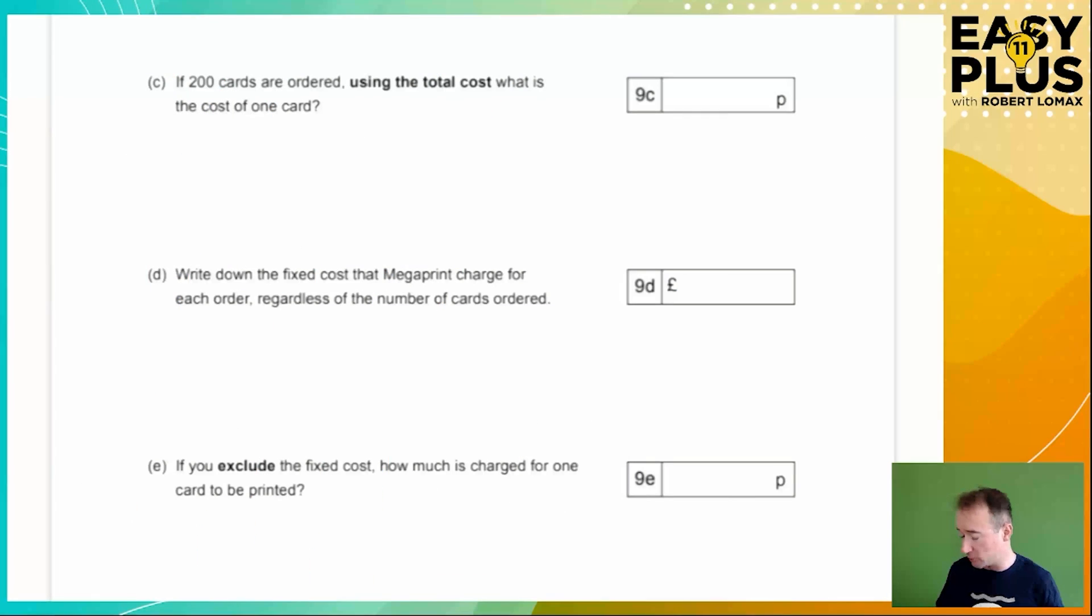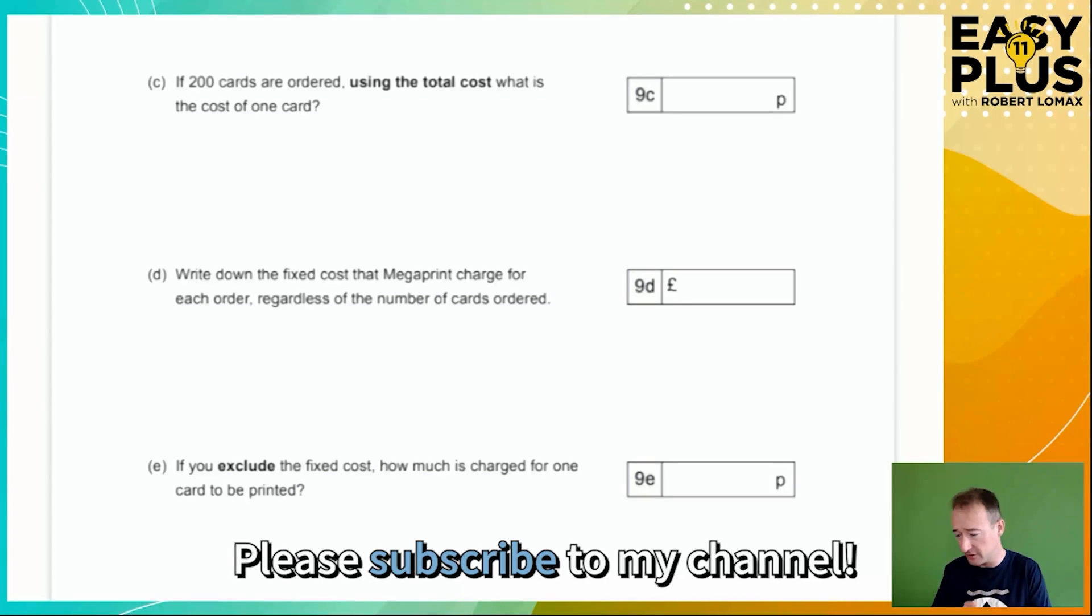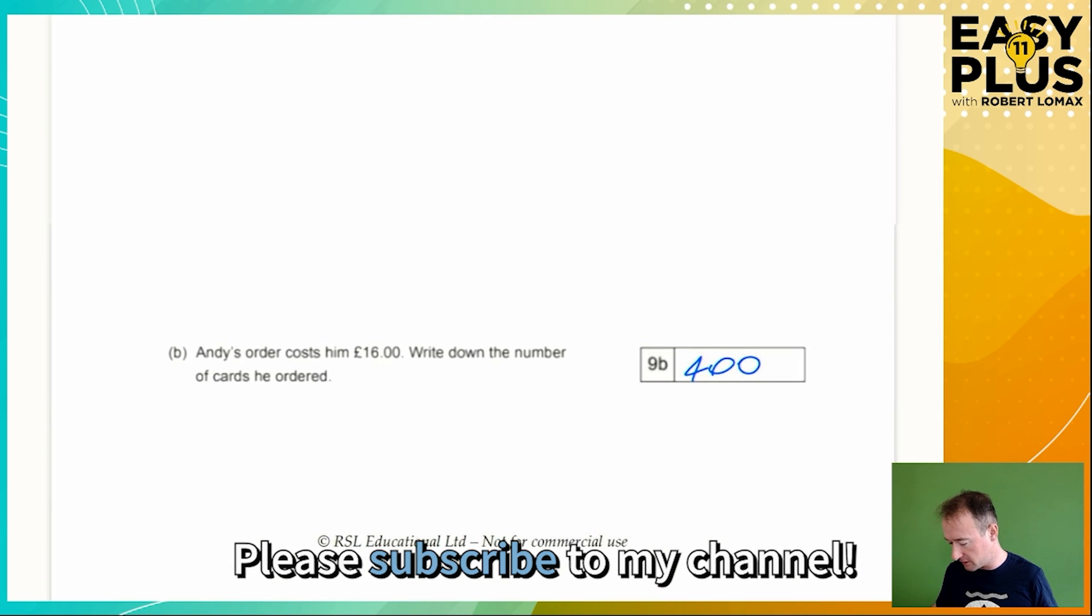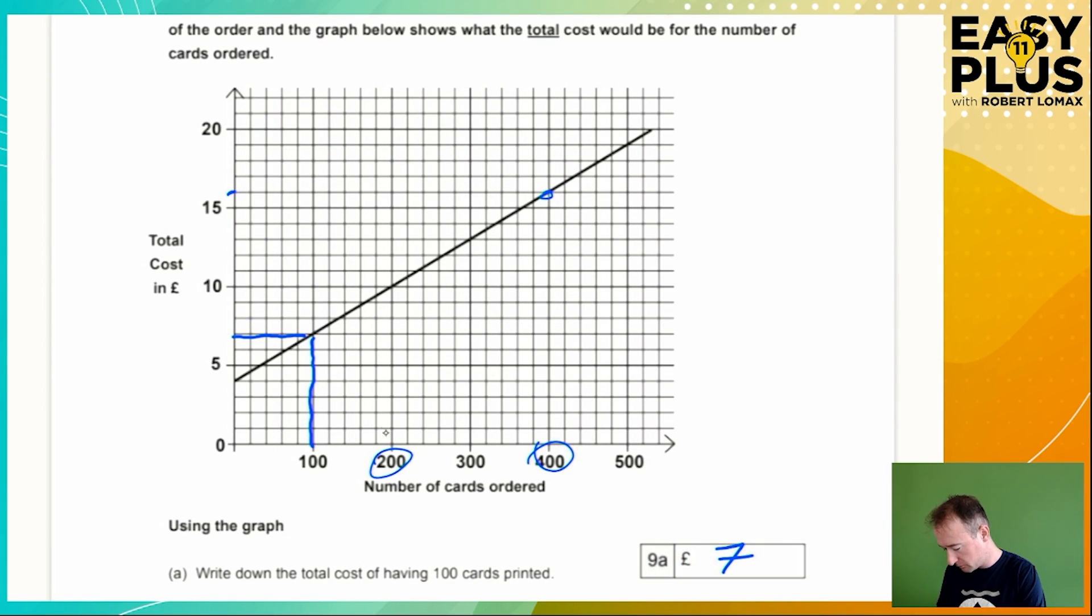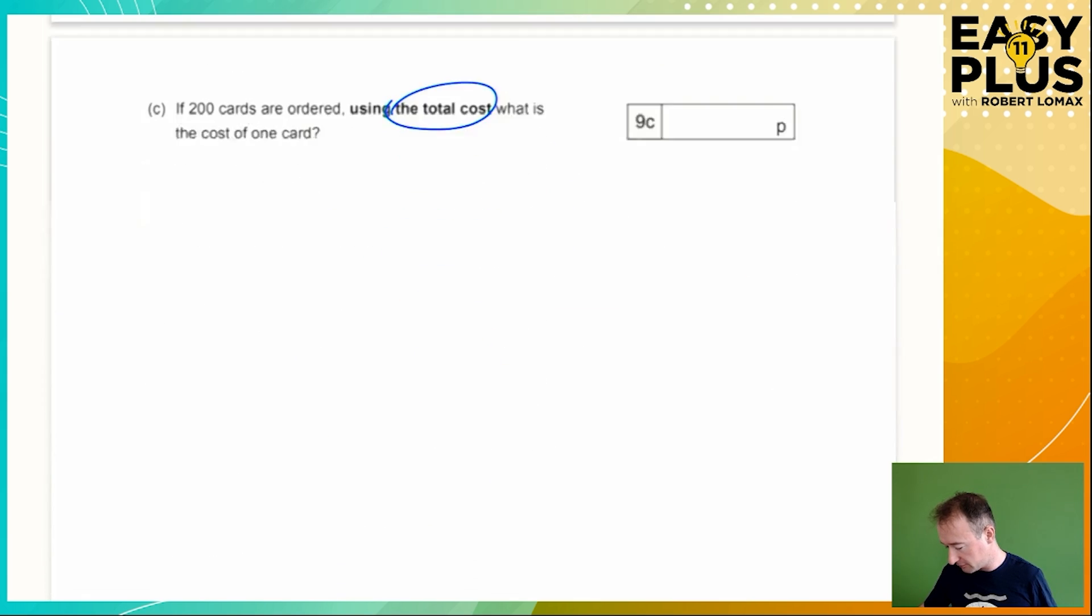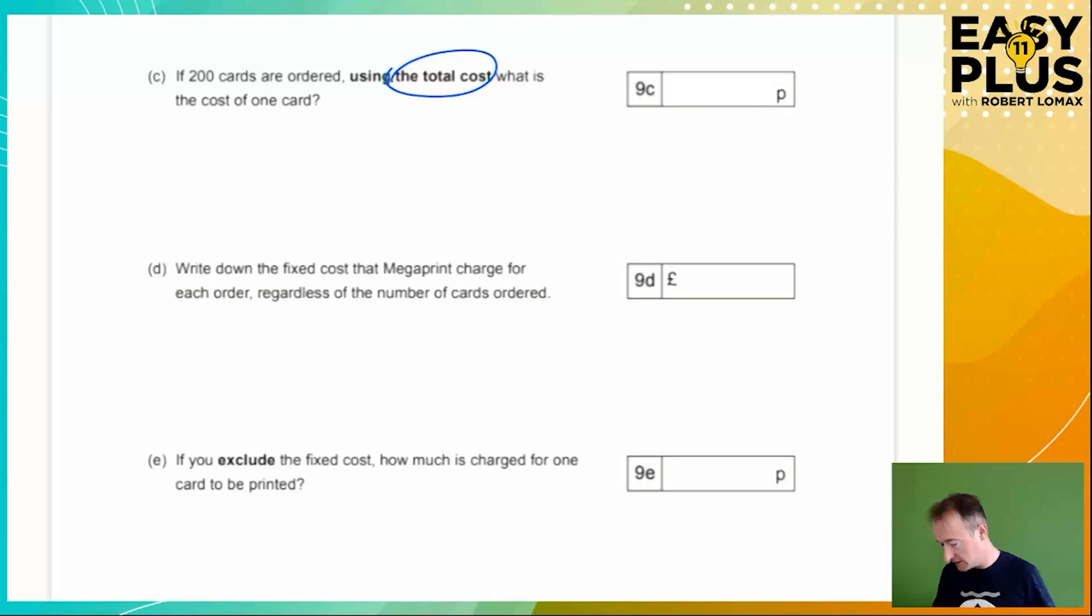If 200 cards are ordered, using the total cost, what is the cost of one card? So we need to find the total cost of 200 cards first of all. Then we need to divide that by 200 to get the cost of one card. Let's start off by finding the total cost and then the rest should become clear. So 200 cards, we're looking here. We need to go up until we meet the line, which is here, and we go across and the total cost is £10.